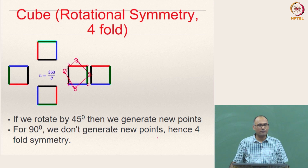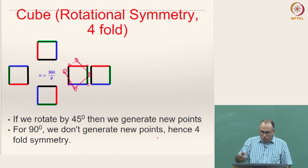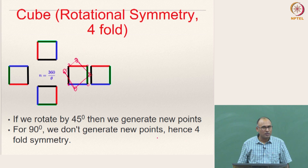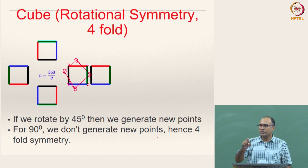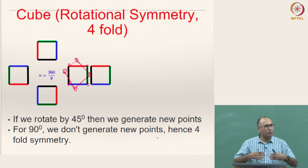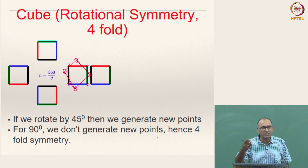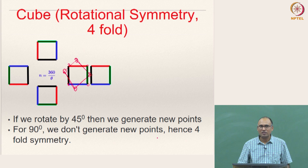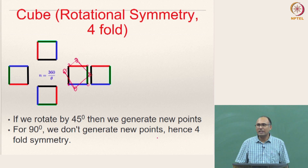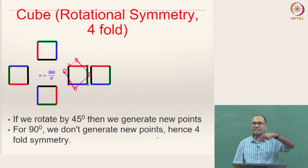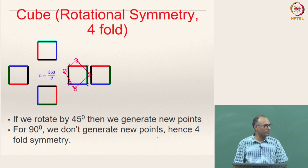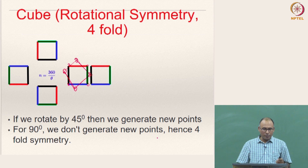A cube also has 2-fold symmetry. When you rotate it by 180 degrees, it again gives you the same lattice position. That means it has 4-fold symmetry, also 2-fold symmetry, and 1-fold. But when talking about the symmetry level, you usually look at the highest level of symmetry possible, and that is represented as the symmetry level of the cell. That is why whenever you talk about the symmetry level of a cube, you only say it has three 4-fold symmetry axes — you do not talk about 2-fold because 4-fold is higher.